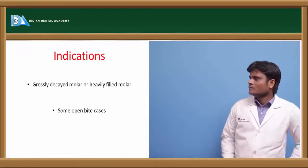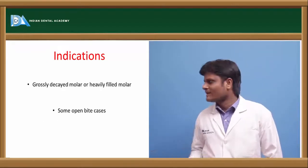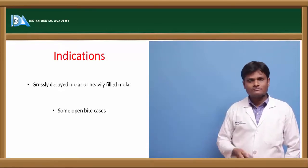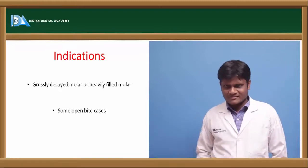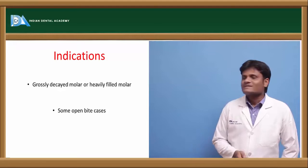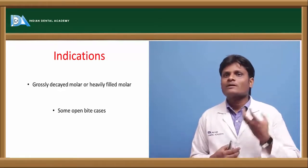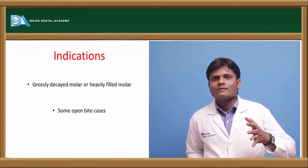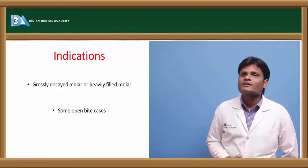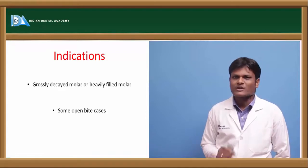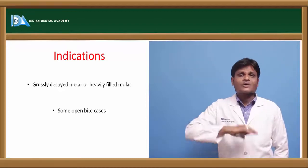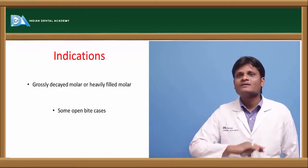We usually avoid first molar extractions; they are extracted only in cases where they are grossly decayed and their prognosis, even after endodontic therapy, is very poor. An interesting entity regarding extraction of first permanent molars is something called Wilkinson extraction. This says that we will extract all first permanent molars between the age of 8.5 to 9.5 years. The concept underlying Wilkinson extraction is that first permanent molars are more prone for caries, and once caries attacks first permanent molars, it can spread to other teeth.